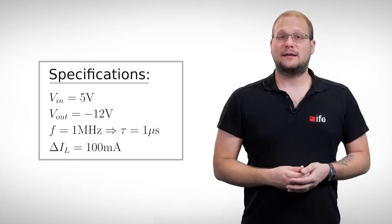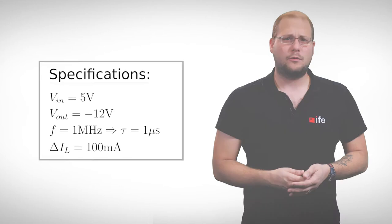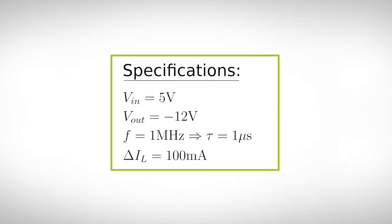For a better understanding, a small design example. We want to design a supply for a minus 12V system out of a 5V input. The switching frequency should be 1MHz and the allowed ripple current of the inductor is 100mA.